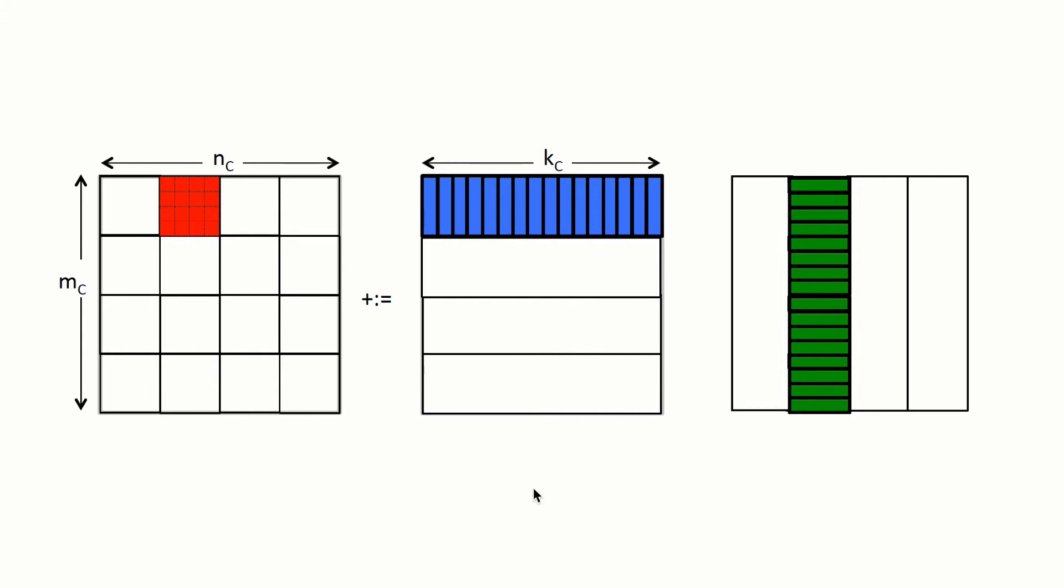So what that means is that we really only need to keep the micro panel of B in the cache as long as it is needed to update the current column of micro tiles of C.